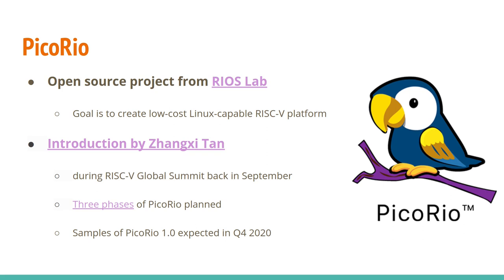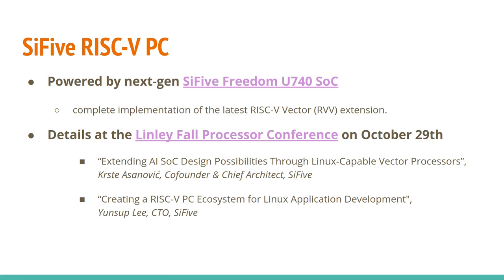Something more practical coming up is from an organization called RIOS Lab based in China — a collaboration between a university there and Berkeley. Their goal is to create a low-cost Linux-capable RISC-V platform, introduced back in September at the RISC-V Global Summit. They have three phases planned, with the first phase having samples available by the end of this year. The idea of more affordable boards is really exciting because not everyone can afford $500, and we want to get as many people as possible trying out RISC-V and porting their software to it.